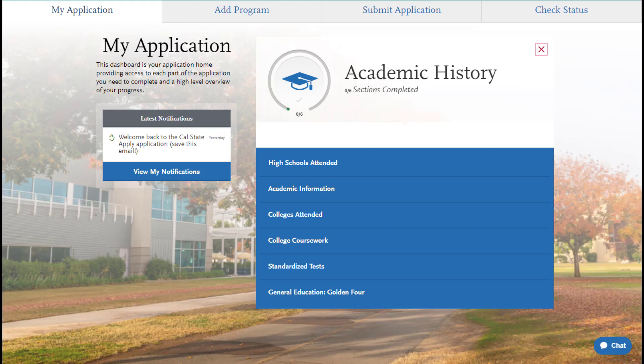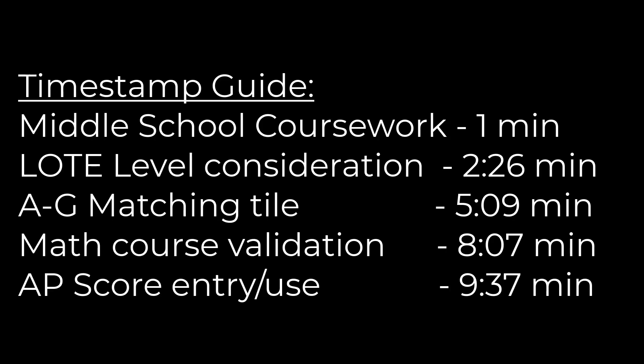Why are we giving language other than English and math its own video? Because these two subject areas are especially complicated. They are the two that you are allowed to potentially use middle school coursework for. They are the two that have some very delicate validation built into them. They are the two we often see AP test scores used for, college coursework used for, and we see a huge volume of errors in these two subject areas specifically. So we wanted to create a video to break down all the different ways that you can meet your area E, your LOTE, or your area C math course requirements, and the proper ways to enter that and some of the common mistakes that we see so that you can avoid them in your application.